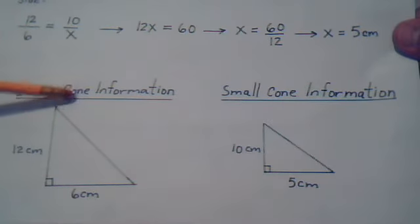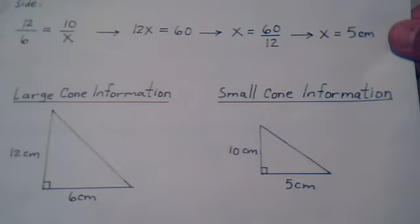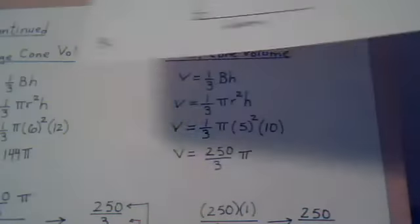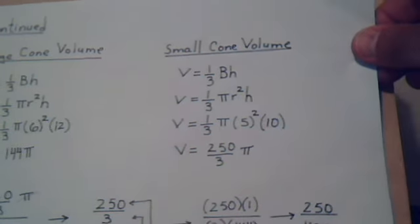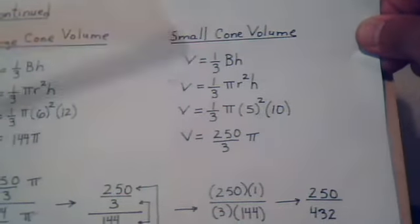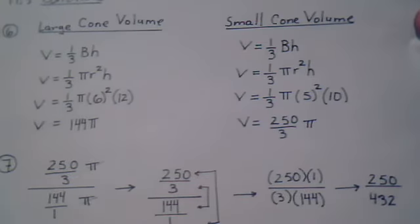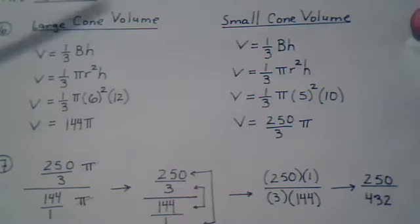So this would be the large cone information, and this is the small cone information. Now you bring in the volume formula for a cone. So notice they're the same since they're both cones. This is just a larger cone and a smaller cone.